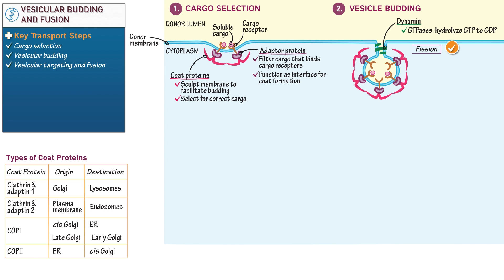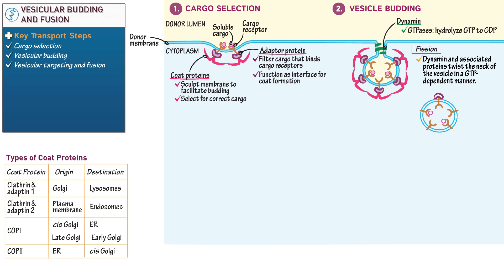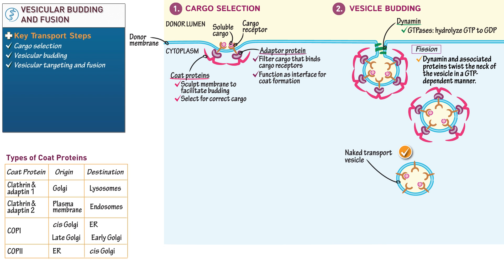Indicate that via fission, dynamin and associated proteins twist the neck of the vesicle in a GTP-dependent manner, which pinches off the vesicle from the donor membrane. Now draw the vesicle suspended in the cytoplasm. Below it, draw a naked transport vesicle that has shed its coat and adapter proteins. These external proteins dissociate from the vesicular membrane after fission occurs. Label this step uncoating, during which the adapter and coat proteins that dissociate get recycled via the retrieval pathway and return to the donor compartment.